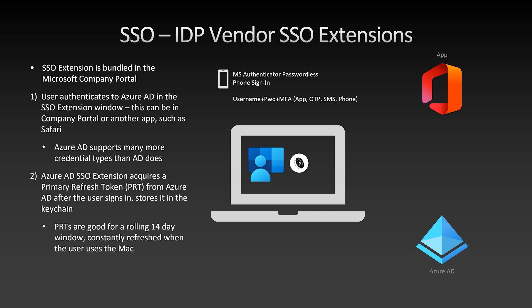A key thing to remember is that Primary Refresh Tokens are good for a rolling 14-day window. So as long as the user is constantly using their Mac, it's going to be refreshed over and over again. In the demo, there were no prompts whatsoever — very seamless and not intrusive. That was because at some point in the past, these steps were followed and the user got prompted to authenticate to Azure AD, and after that it was just silently rolling in that 14-day window. Exactly — I signed into the SSO extension a couple weeks ago, and my PRT has just been refreshed over and over again. It's very similar to the architecture of what we do in the iOS environment where you have that PRT pattern bouncing through the broker.